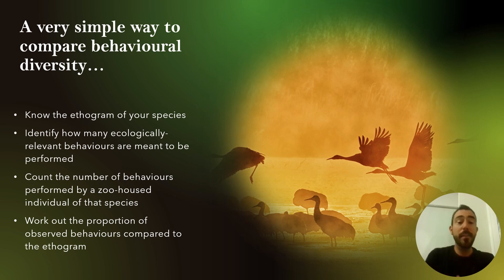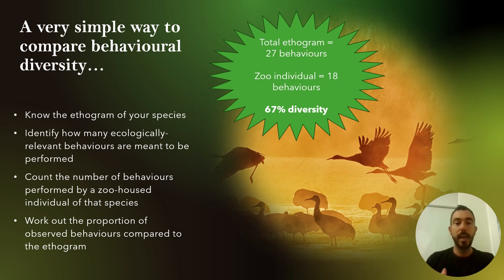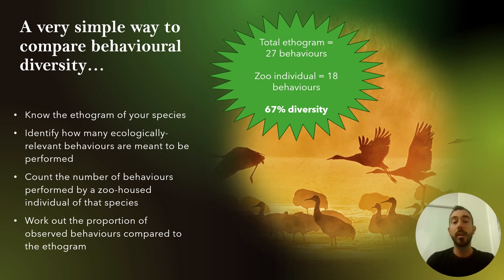If you are recording the behaviour of cranes, for example, and you have an ethogram of what a particular species of crane would do in the wild, and you go around different zoos and count the number of behaviours you see captive individuals performing — if the wild crane had an ethogram that included 27 different behaviours and in one zoo an individual bird performed 18 behaviours, then 18 divided by 27 gives you 67% behavioural diversity for that individual of that species in that zoo. There's no index here; it's simply the proportion of the overall ethogram that you have seen performed in those captive settings.